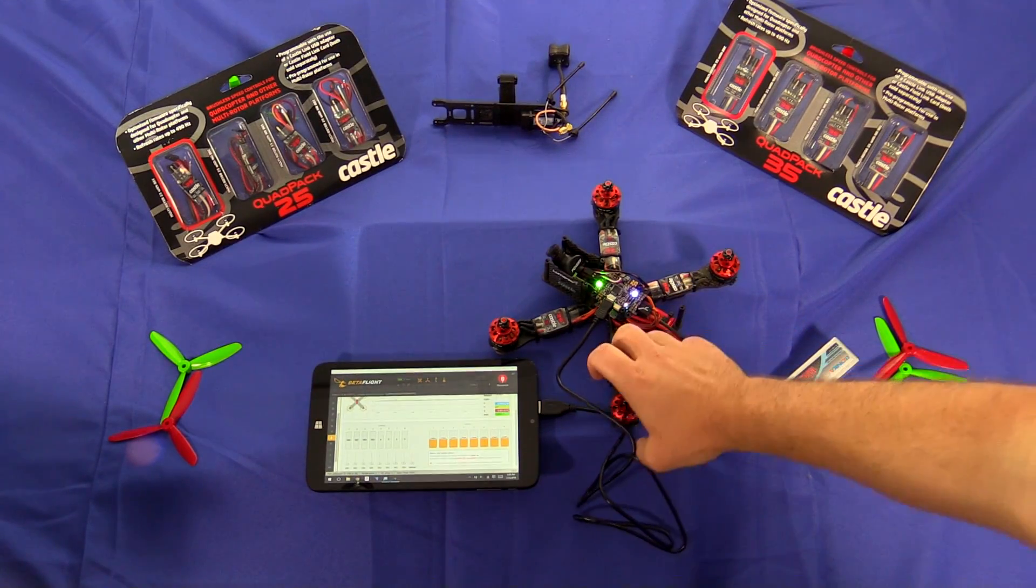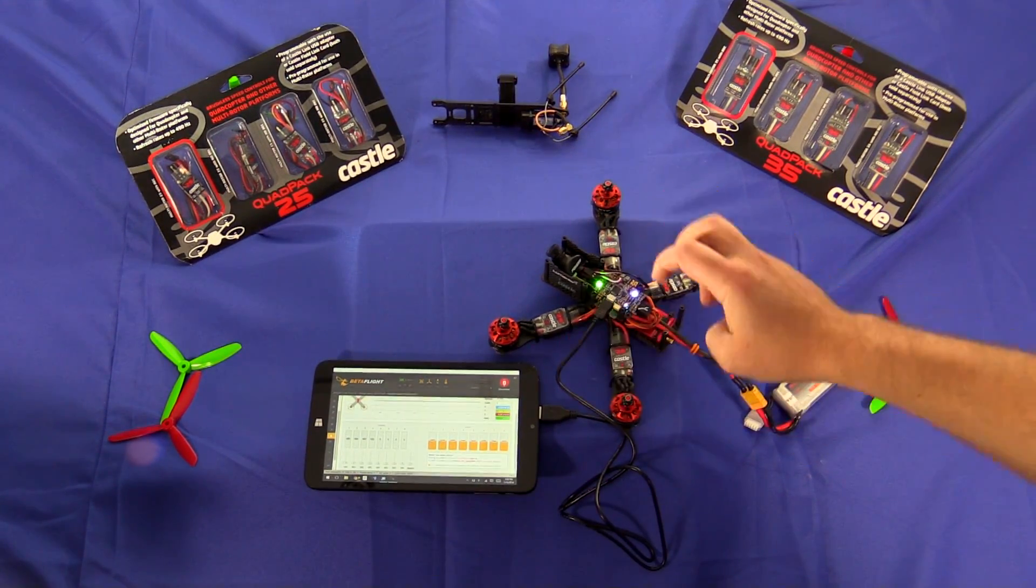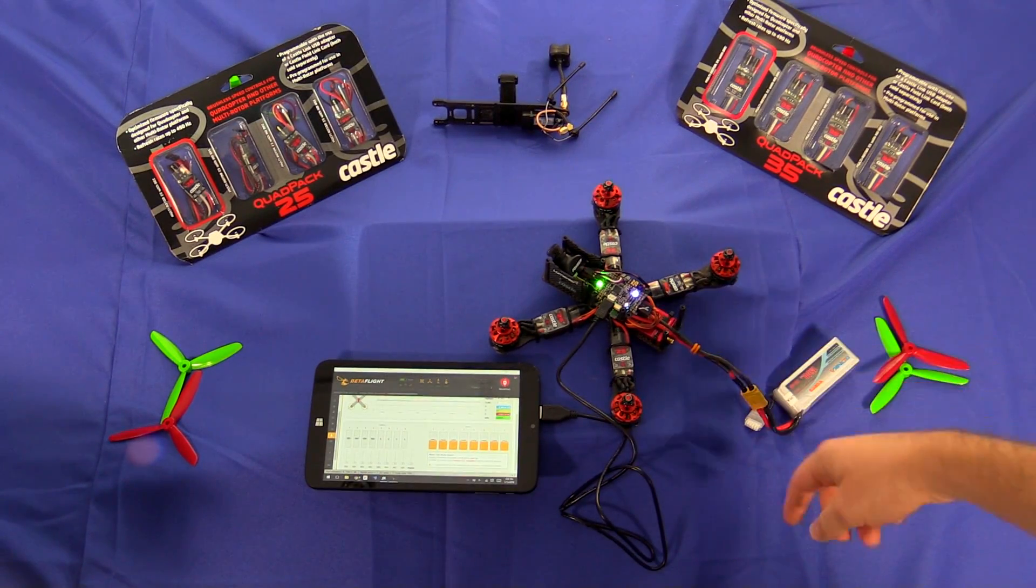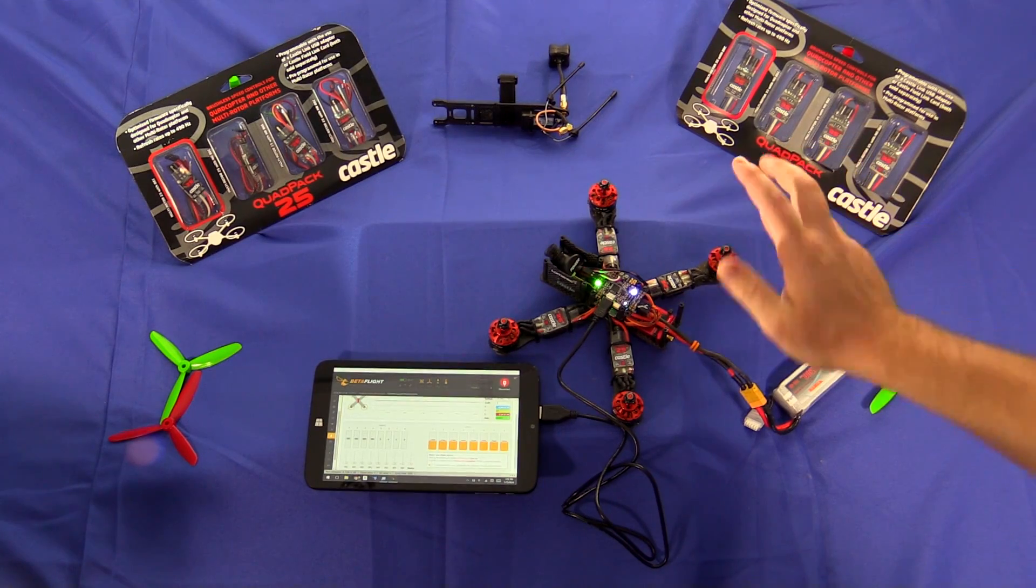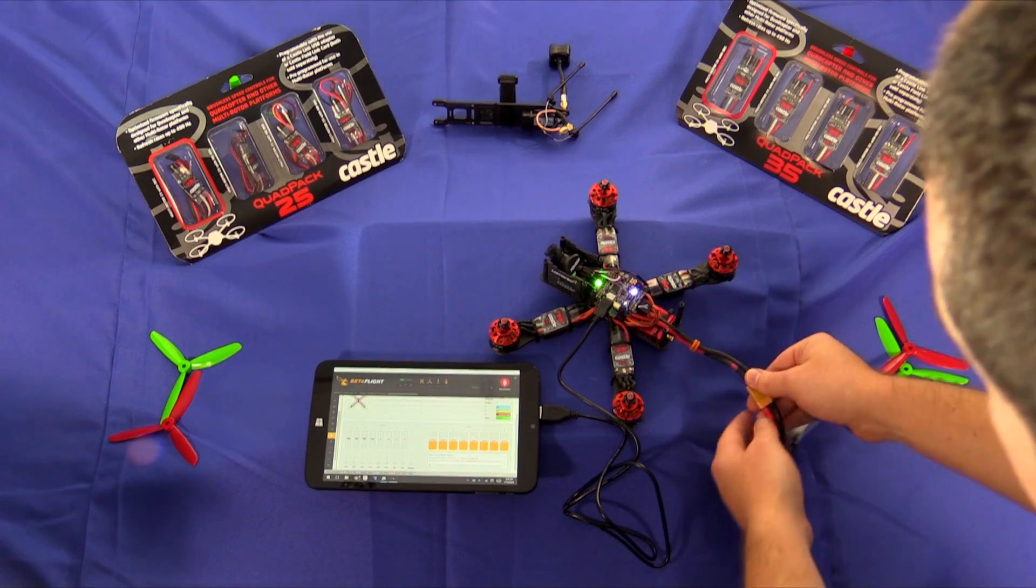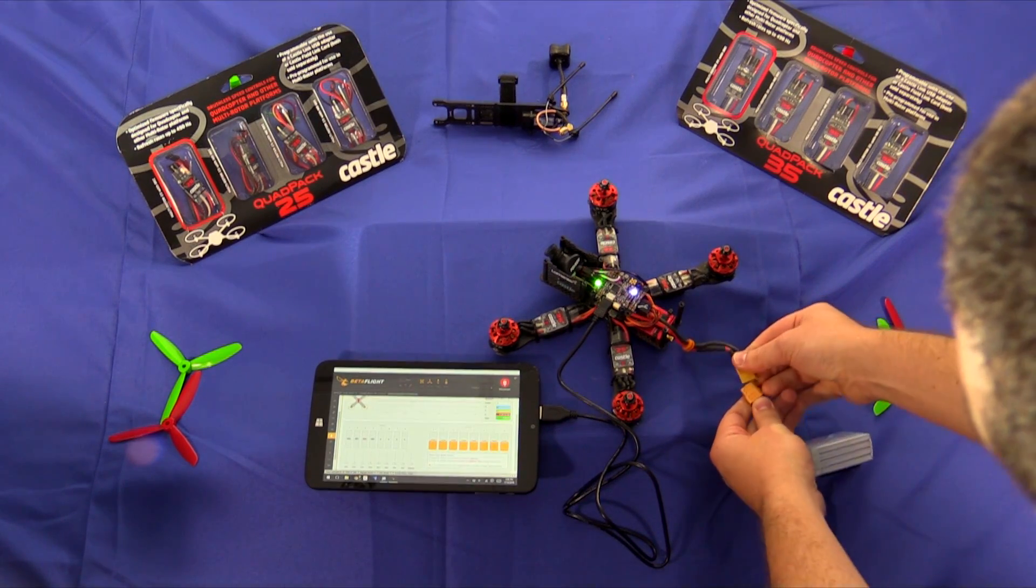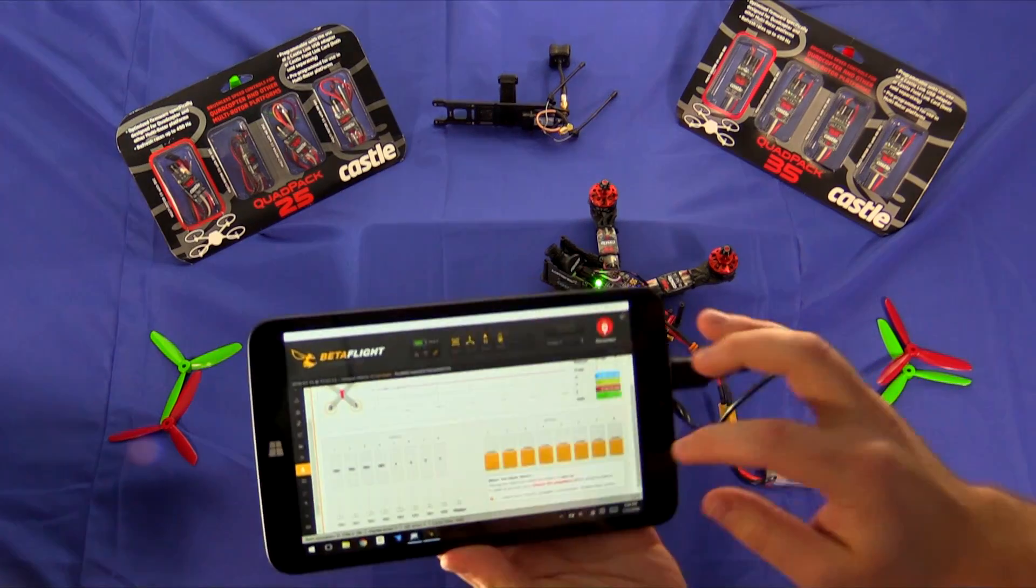The first two beeps tells you that it's recognizing the rotation and then you spin it again in the same direction and it confirms the setting. And now I've written the motor direction to all four of my ESCs here. I'm going to cycle the power and then verify that that direction is correct.